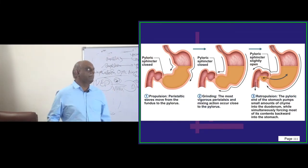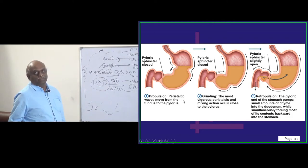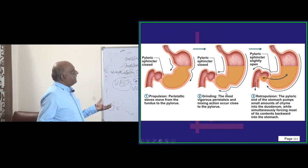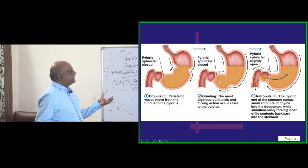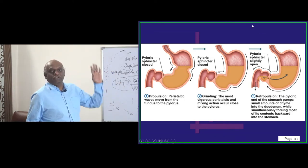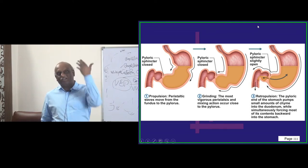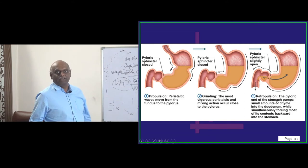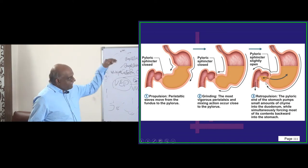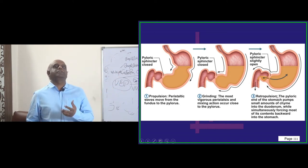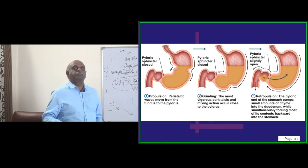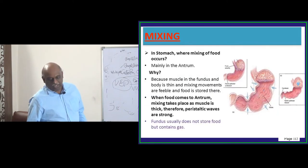Looking at the stomach, the first thing is propulsion: peristaltic waves move from the fundus towards the pylorus. Then you have grinding: the most vigorous peristalsis and mixing occurs very close to the pylorus. Then retropulsion occurs — the pyloric end pumps small amounts of chyme into the duodenum and simultaneously pumps most of the contents back into the stomach. These are the three different types of waves in the stomach.